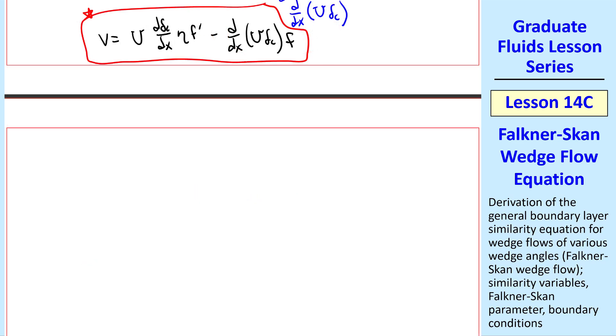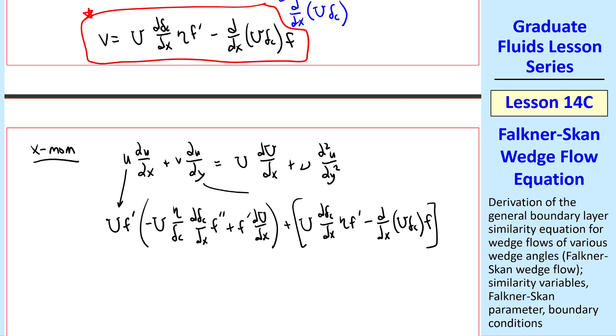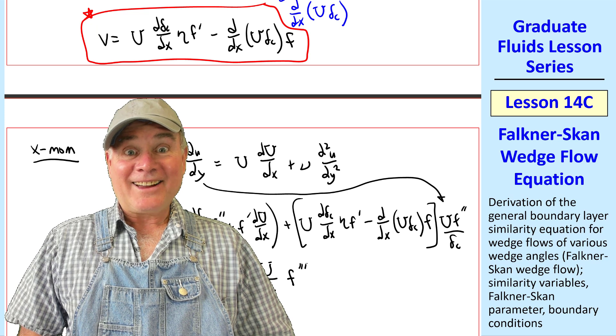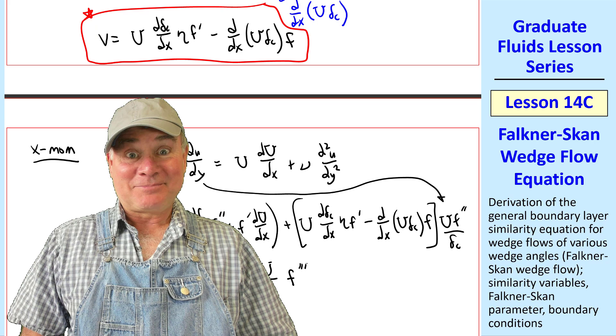Now let's plug this v, along with our equations for u and its derivatives, into the x-momentum equation. We get Uf prime from u, and then our expression for del u del x, and then use this expression for v, and then del u del y. And on the right hand side, the first term stays as is, and the last term is simply nu u over delta c squared f triple prime. All this algebra is making my head spin.